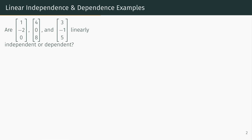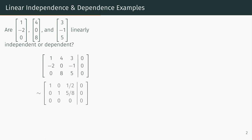Let's look at an example. Are the three vectors listed linearly independent or linearly dependent? To decide, put the vectors in an augmented matrix with zeros in the last column, and row reduce. Since the third column is a free variable column, we know that there are infinitely many ways to obtain the zero vector as a linear combination of the given vectors. Therefore, there is a non-trivial way to obtain the zero vector as a linear combination, and so these vectors are linearly dependent.